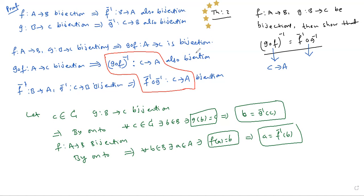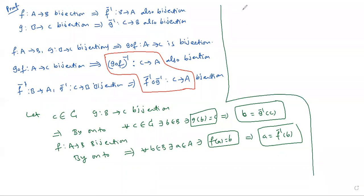This theorem is expected. Now, if G of B is equal to C and F of A is equal to B, then G circle F of A is equal to C. That implies G circle F whole inverse of C is equal to A.